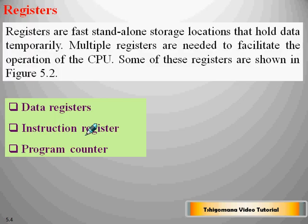Registers are fast standalone storage locations that hold data temporarily. Multiple registers are needed to facilitate the operation of the CPU. Some of these registers include data registers, instruction registers, and the program counter.